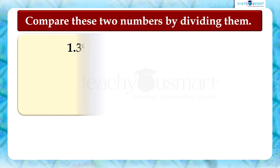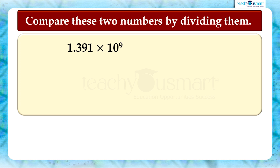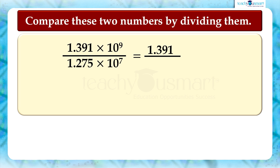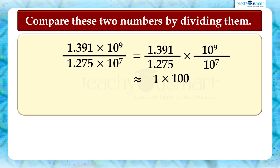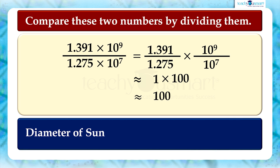That is, 1.391 multiplied by 10 raised to 9 divided by 1.275 multiplied by 10 raised to 7 is approximately equal to 1 multiplied by 100, which is approximately equal to 100. So, we can say that the diameter of the Sun is about 100 times the diameter of the Earth.